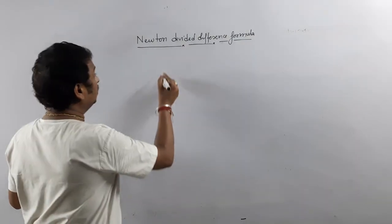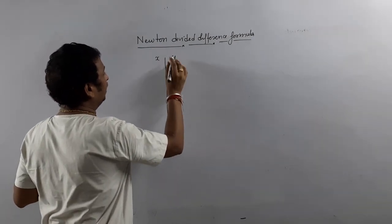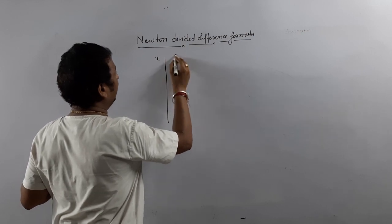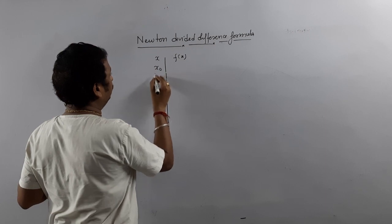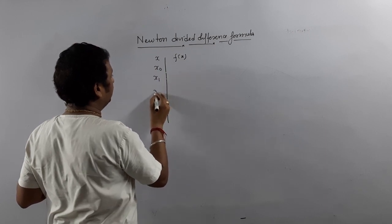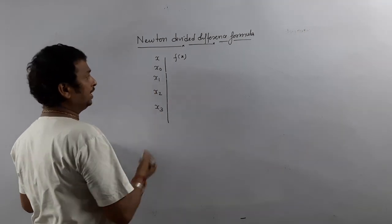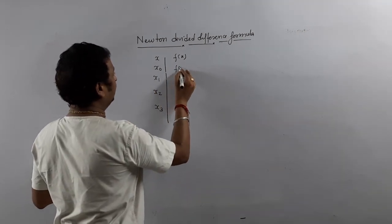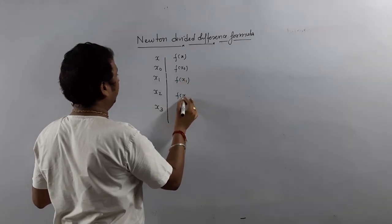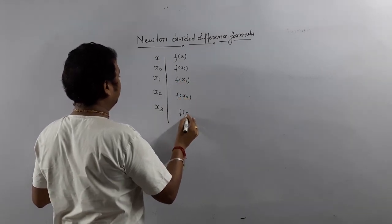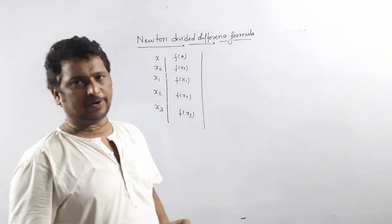Suppose we have given data which is unequally spaced — that means x and corresponding f(x) values are given. We denote these as x0, x1, x2, x3 — suppose these four data points are given. So we have f(x0), f(x1), f(x2), f(x3) given. Now I am going to write the first divided difference table.